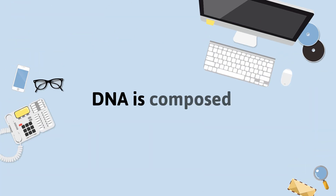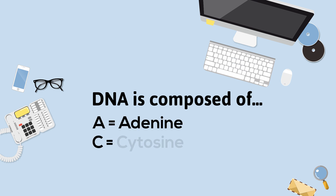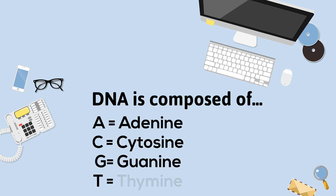DNA is made up of four nitrogenous bases: adenine, cytosine, guanine, and thymine. Let's shorten them to A, C, G, and T.